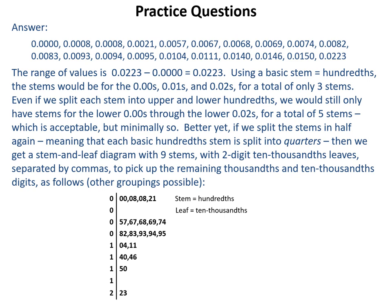Other groupings are possible — for example, using five stems by splitting hundreds into two instead of four. In general, with many of these problems there is a decision to make about how to divide the stems, and different valid choices can be made.